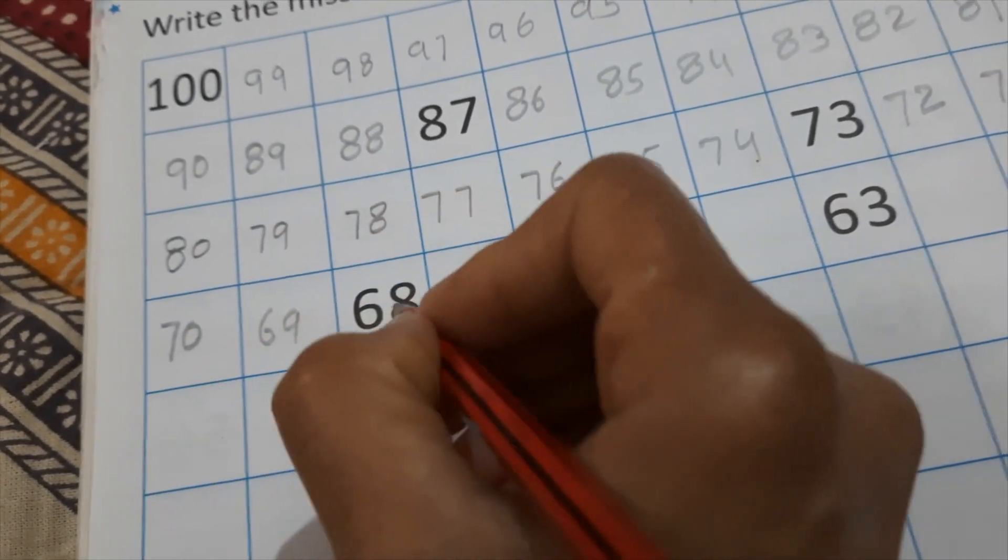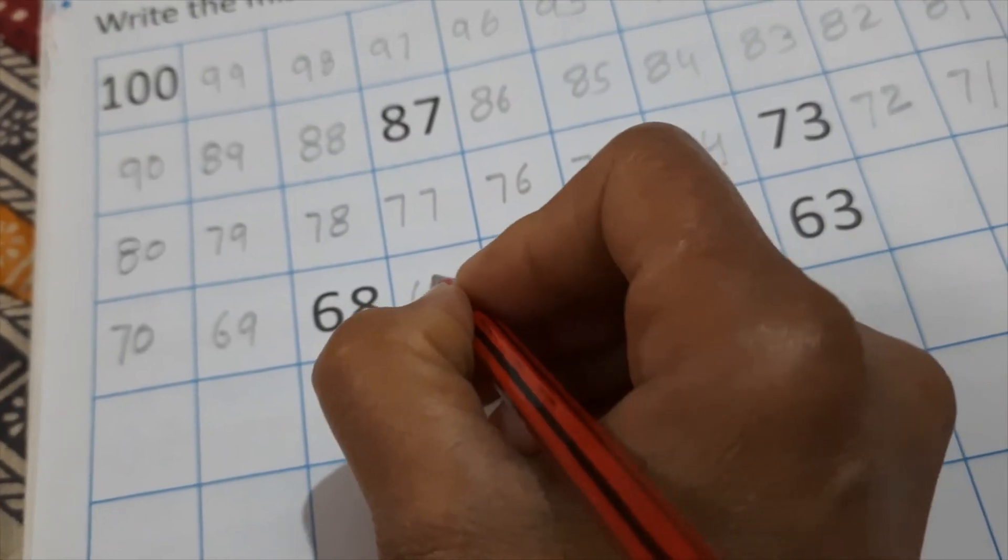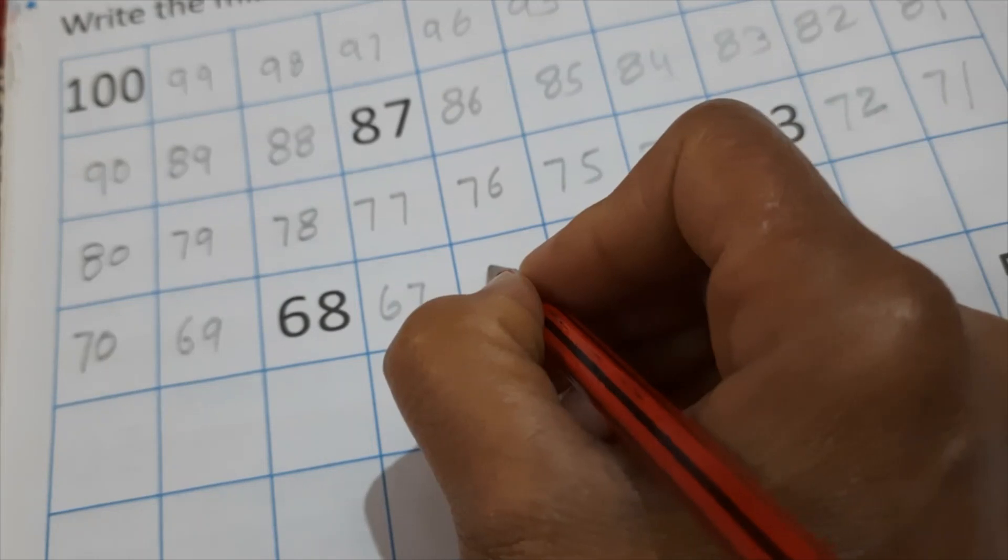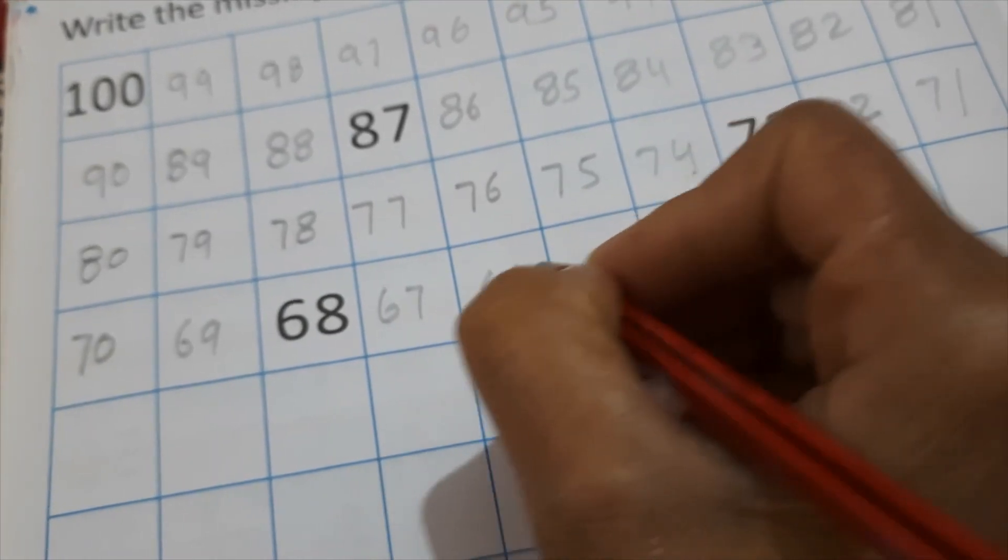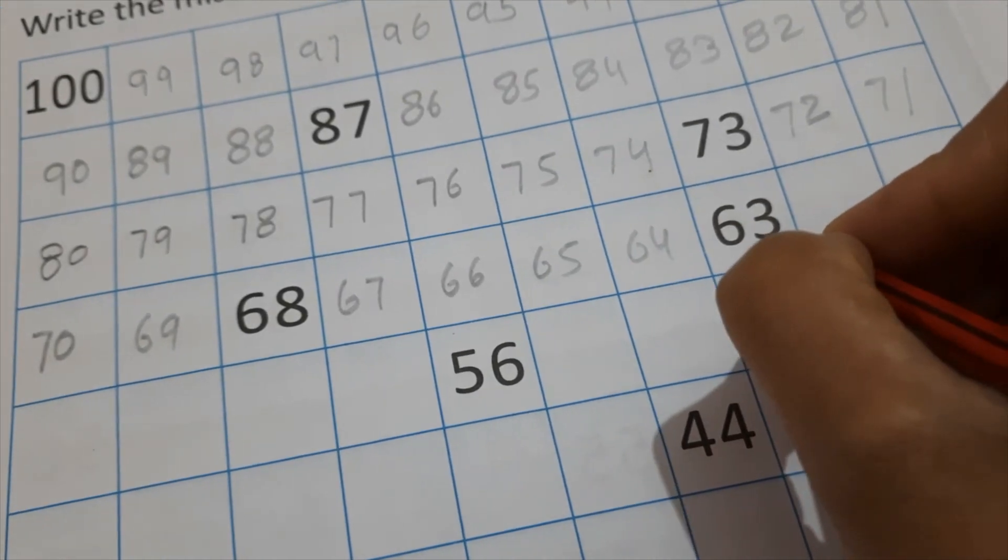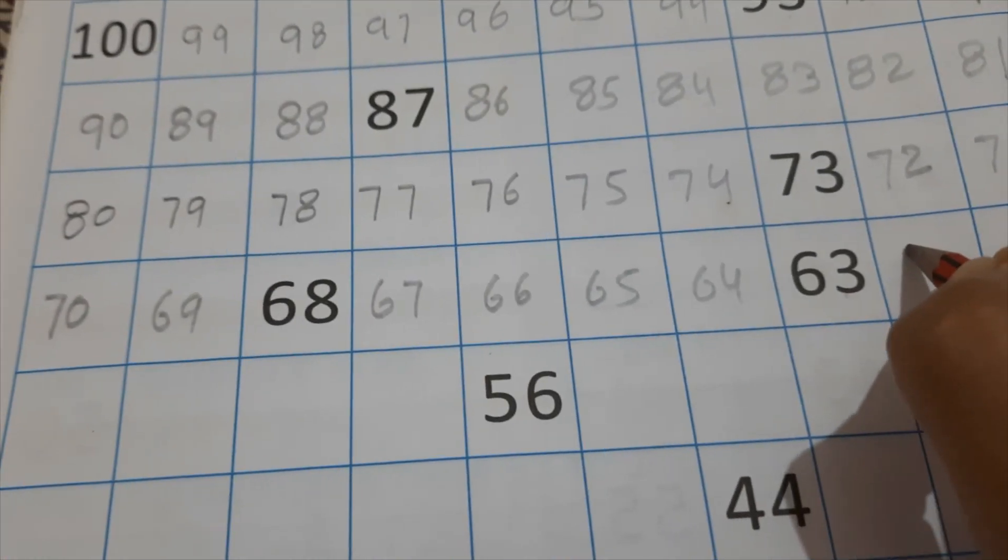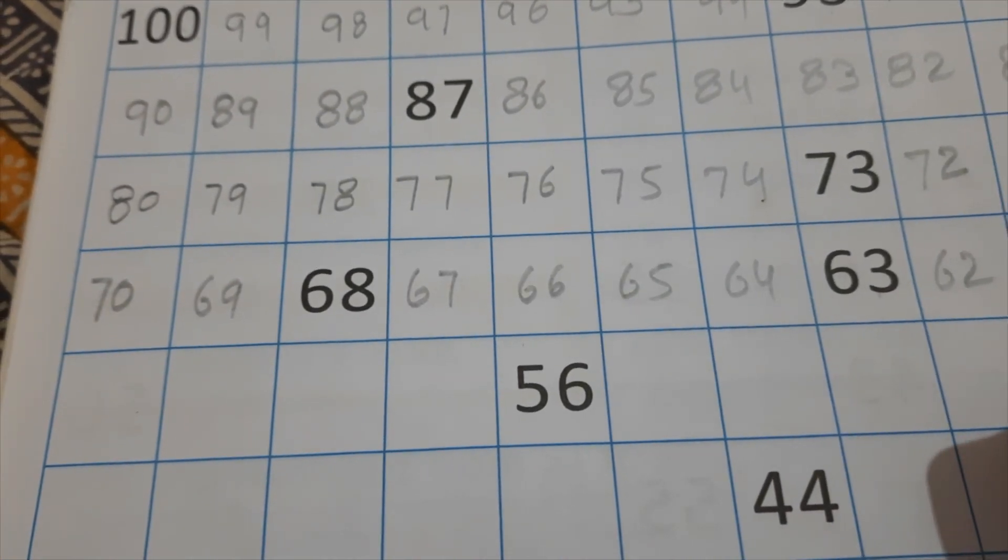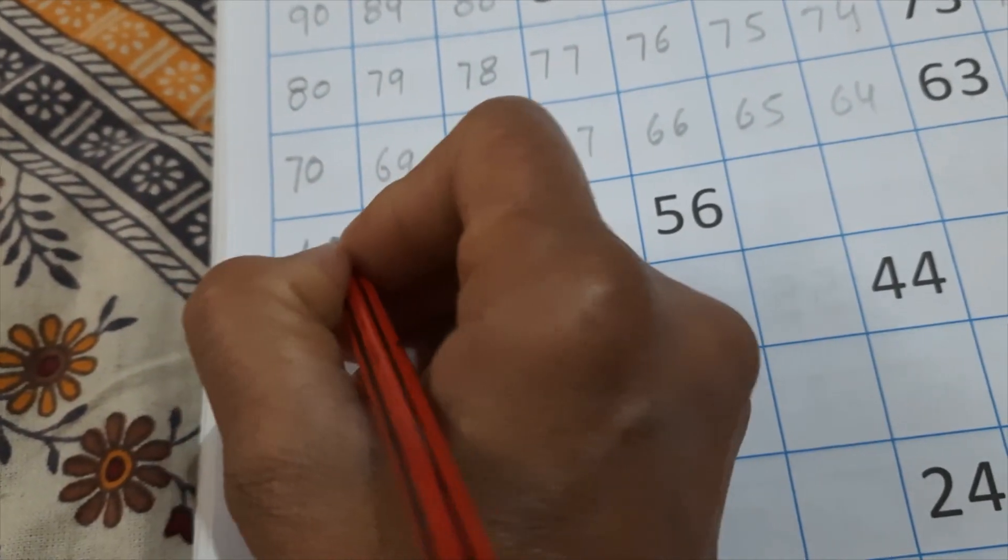69, 68, 67, 66, 65, 64, 63 is already right. 62, 61. Next. 60.